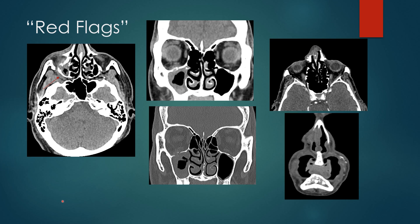Red flags on sinus imaging: if you have abnormal soft tissue or abnormal stranding within the retromaxillary fat in the pterygopalatine fossa, that is an early indicator of invasive sinusitis — often invasive fungal sinusitis. You want to see a nice fat plane behind the maxillary sinus, not soft tissue and stranding. In the same patient, circumferential mucosal thickening and fluid in the maxillary sinus with stranding inferiorly in the orbit — inferior to the inferior rectus muscle — is another reason to suspect invasive sinusitis, confirmed by a bony defect on bone windows.